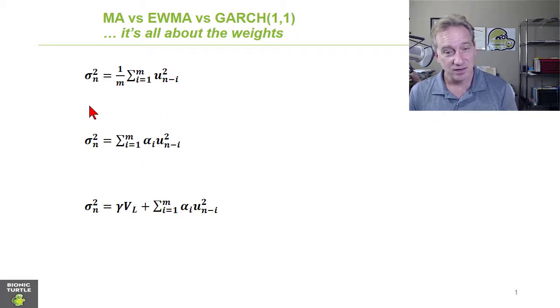And we'll note that this expression here has a specific instance in the moving average where the weights here, denoted by alpha sub i, are equal. So if each alpha sub i has an equal weight or is equal to one divided by M, then we have a special case here of the moving average where all the squared returns get equal weight.